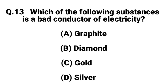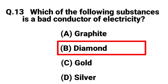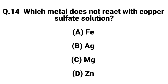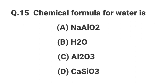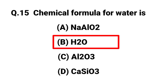Question number thirteen: which of the following substances is a bad conductor of electricity? Answer: B, diamond. Question number fourteen: which metal does not react with copper sulphate solution? Answer: B, silver. Question number fifteen: the chemical formula for water is. Answer: B, H2O.